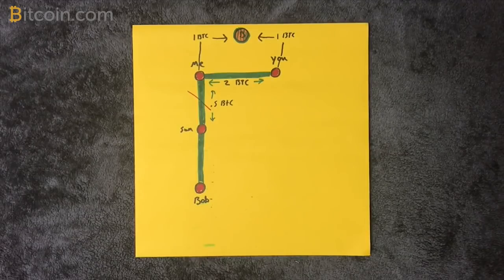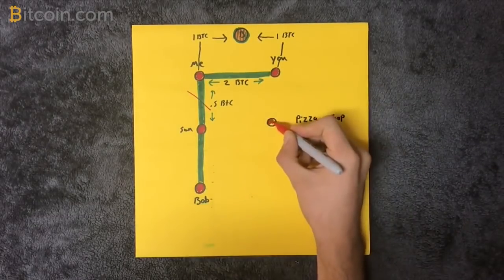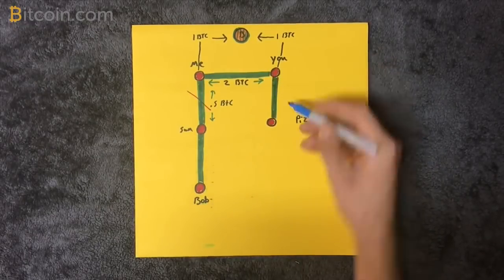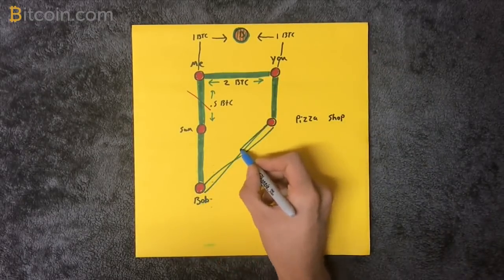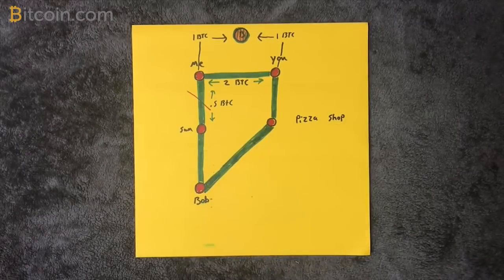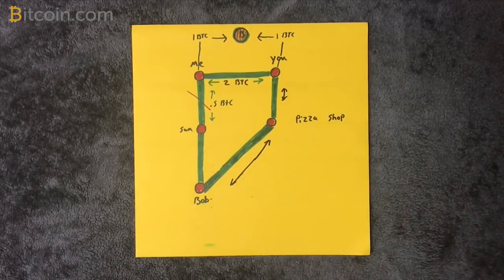Luckily it turns out that Bob and you both eat at the same pizza shop regularly enough that you both have open channels. The pizza shop has plenty of Bitcoin in its channel and is one less hop than the last example. Bob gets paid, less fees for you, and the pizza shop gets a reward for providing a useful service. Everyone wins.